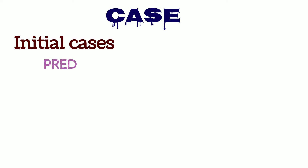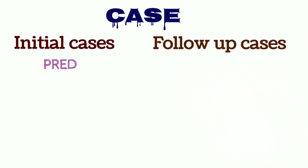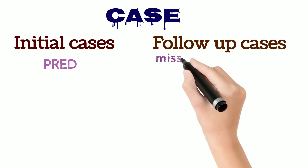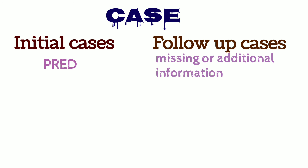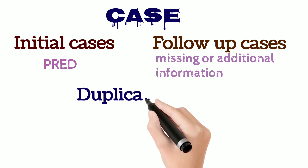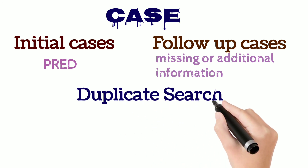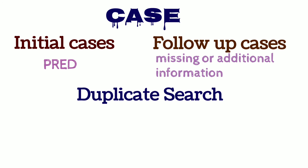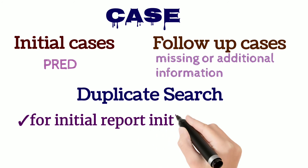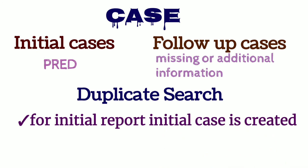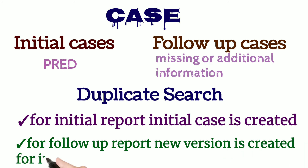For follow-up cases, relevant information that was not available in the initial case should be asked specifically for documentation. To identify whether an adverse event report is initial or follow-up, a duplicate search is performed in the safety database, helping to avoid duplicate entries. If identified as initial, a new case is created; if identified as follow-up with new information, a new version is created.